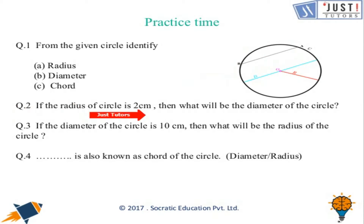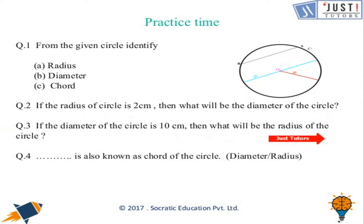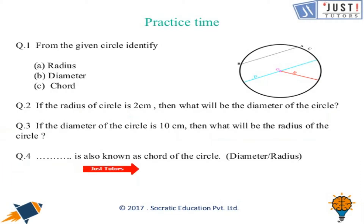If the radius of a circle is two, then what will be the diameter? The diameter will be double the radius, that is four. If the diameter of a circle is ten, what will be the radius? That will be half of the diameter, that is five. Diameter is also known as a chord of the circle.